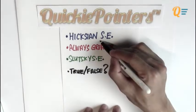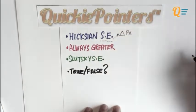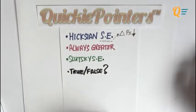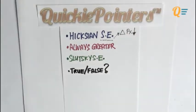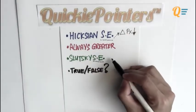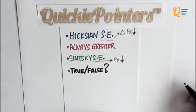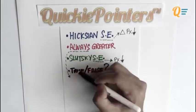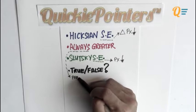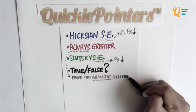Now when we talk about the substitution effect, recall what is the definition of it. I know that I'm going to have to change the price of X — I'll assume it is going to fall. This applies to the Slutsky SE as well. If I want to find the Slutsky SE, I'm also going to change the price of X. Now take note of the word 'always' — it's a very absolute term.